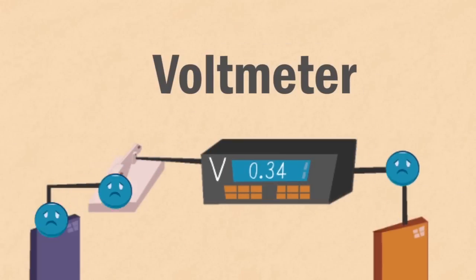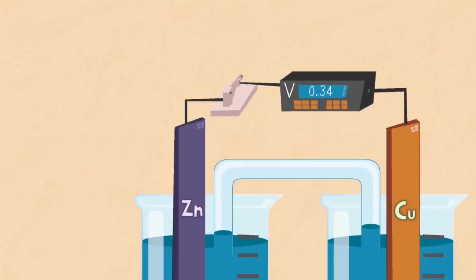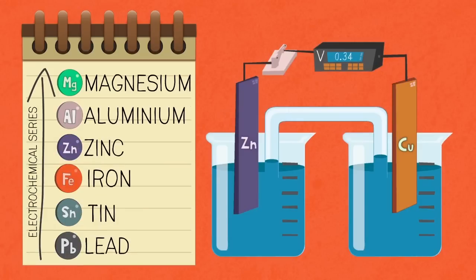Say that you replace the zinc metal for a metal that was higher in the electrochemical series like magnesium. Can you predict what would happen? Pause the video and continue when you're ready.